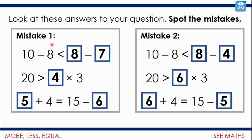Let's check the mistakes. In attempt one: 10 − 8 = 2, 8 − 7 = 1 — there's a mistake because 1 < 2, not equal. Then 20 > 4 × 3: correct. And 5 + 4 = 9, 15 − 6 = 9: correct. So the mistake is on the top line. In attempt two: 10 − 8 = 2, 8 − 4 = 4: correct. 6 × 3 = 18 and 18 < 20: correct. 6 + 4 = 15 − 5: correct. But the mistake is that 6 is used twice and 7 is never used — each digit can only be used once.